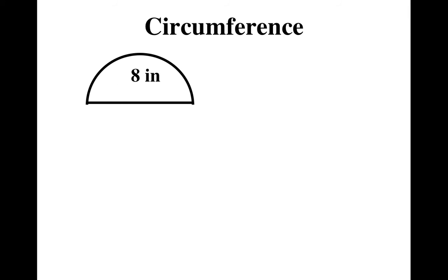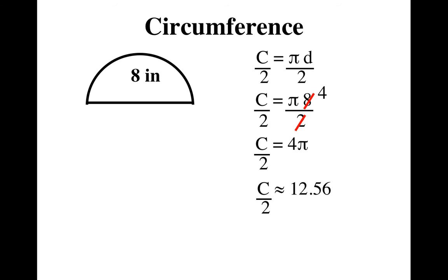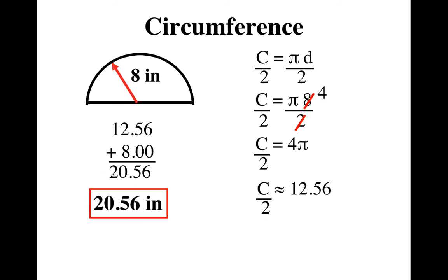All right, you give it a shot. Here's your formula. Oh, by the way, the 8 inches is the entire diameter. I'm back. Divide it by 2, and you'd end up getting 4 pi. 12.56. And don't forget to add in the 8, and you get your answer, 20.56 inches.